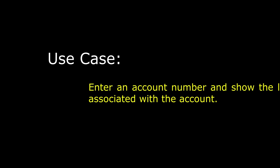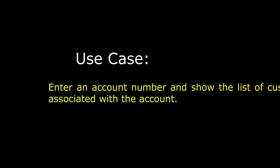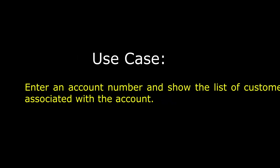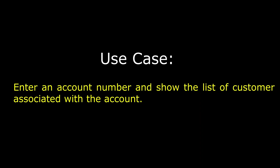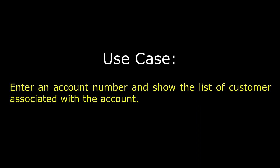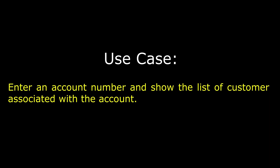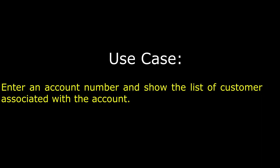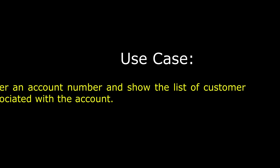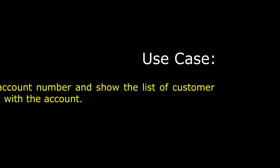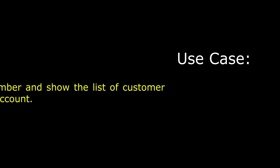Now let's take a use case to achieve that repeating dynamic layout. In our use case, we are going to enter the account number and based on that account number, we are going to fetch the list of customers associated to that account number. As you know, an account can be a joint account or a single account. If it is a joint account, it will have more than one customer associated with it. So to achieve that, we can use the repeating dynamic layout to show that on the section.